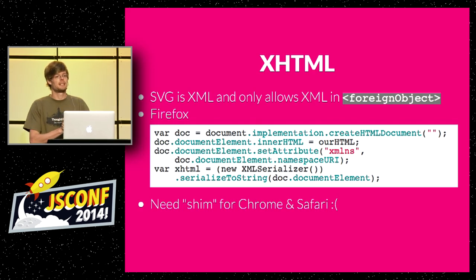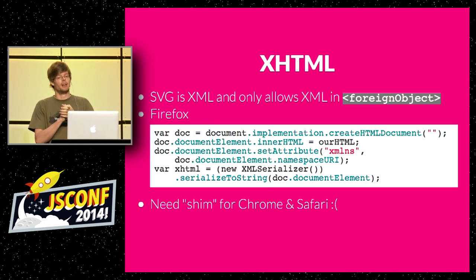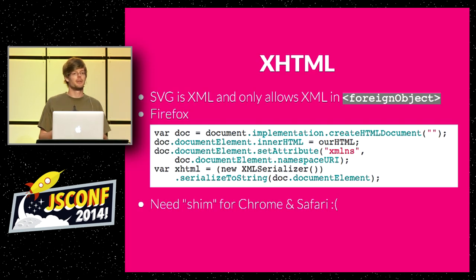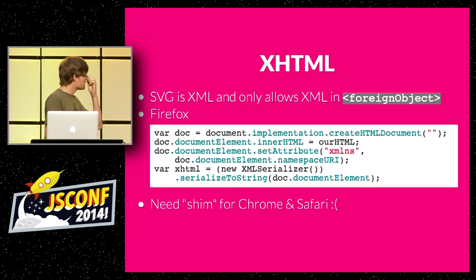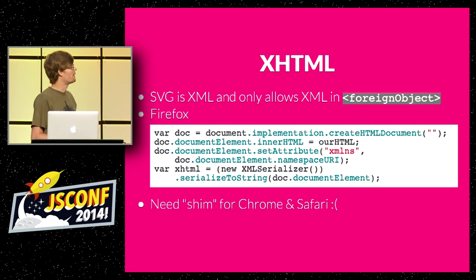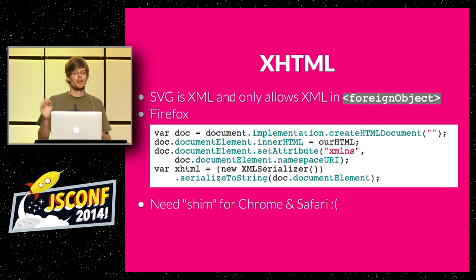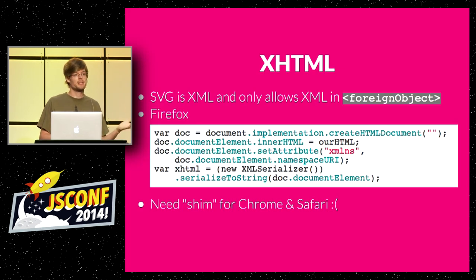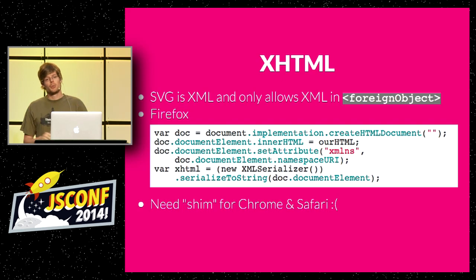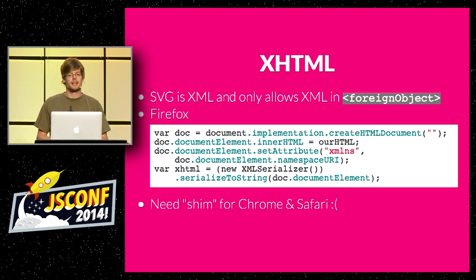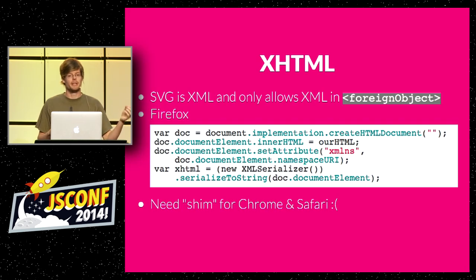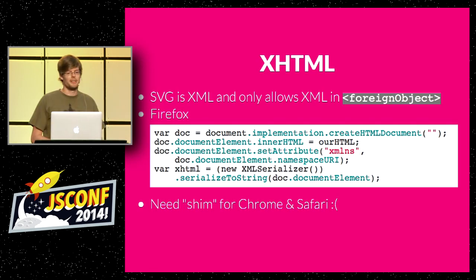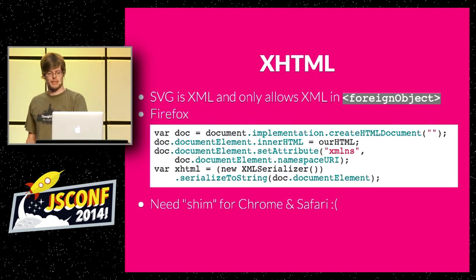What is XHTML? SVG, as an XML standard, can only embed foreign objects that are valid XML. HTML5 goes to great lengths allowing you to do whatever you want and still make it look pretty — that doesn't work well with SVG. Here's a bit of code that creates a document, puts in some HTML, overwrites some XML namespacing, and triggers the Firefox XML serializer to serialize that back as valid XML. This does not work in Chrome and Safari — those browsers say the XML serializer only needs to serialize XML. So there's a shim I wrote for that, basically 150 lines of code, and we need to fall back to a pure JavaScript implementation for those browsers.